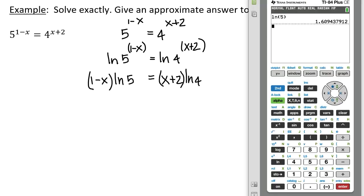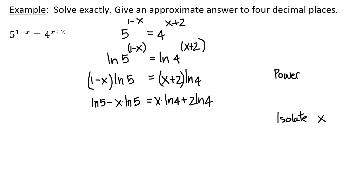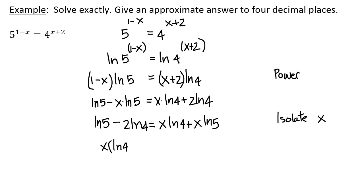ln 5 is just a number (1.609 etc.) and ln 4 is just a number (1.38 etc.). Distributing gives ln 5 minus x·ln 5 equals x·ln 4 plus 2·ln 4. Now isolating the variable, I collect x terms on the right: x·ln 4 plus x·ln 5 on the right, and ln 5 minus 2·ln 4 on the left. Factoring out x gives x times the quantity ln 4 plus ln 5 equals ln 5 minus 2·ln 4.